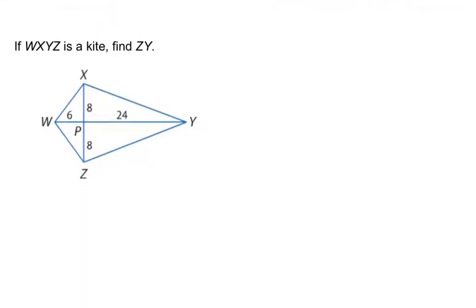Now let's talk about distances. We need to find ZY. The key is that the diagonals are perpendicular, forming a right angle. Since we have a right triangle, we can use the Pythagorean theorem. Let the unknown side be x.